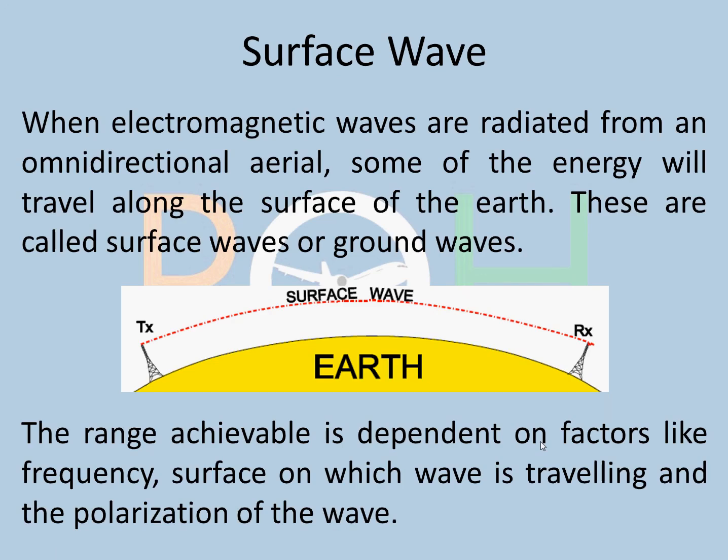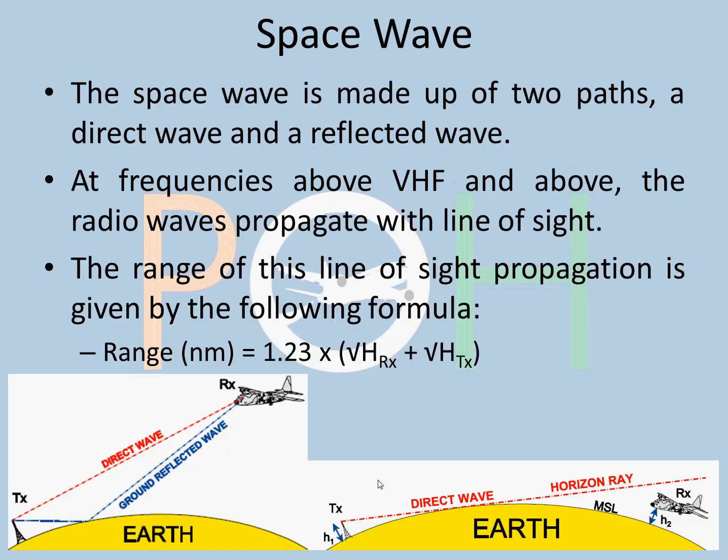Surface wave: when electromagnetic waves are radiated from an omnidirectional antenna, some of the energy will travel along the surface of the earth. These are called surface waves or ground waves. The range achievable is dependent on factors like frequency, the surface on which the wave is traveling, and polarization of the wave.